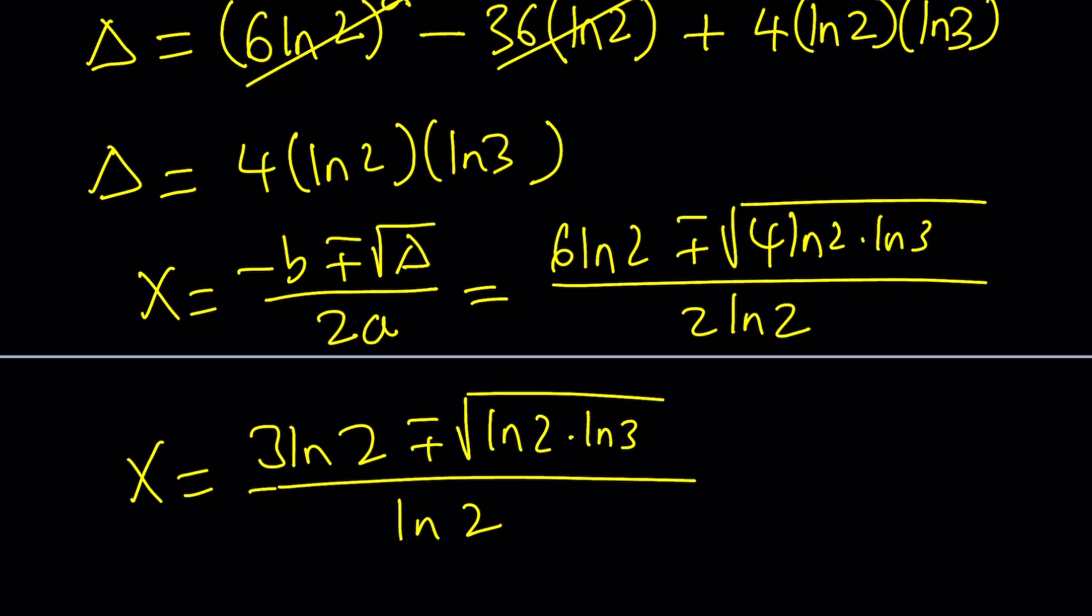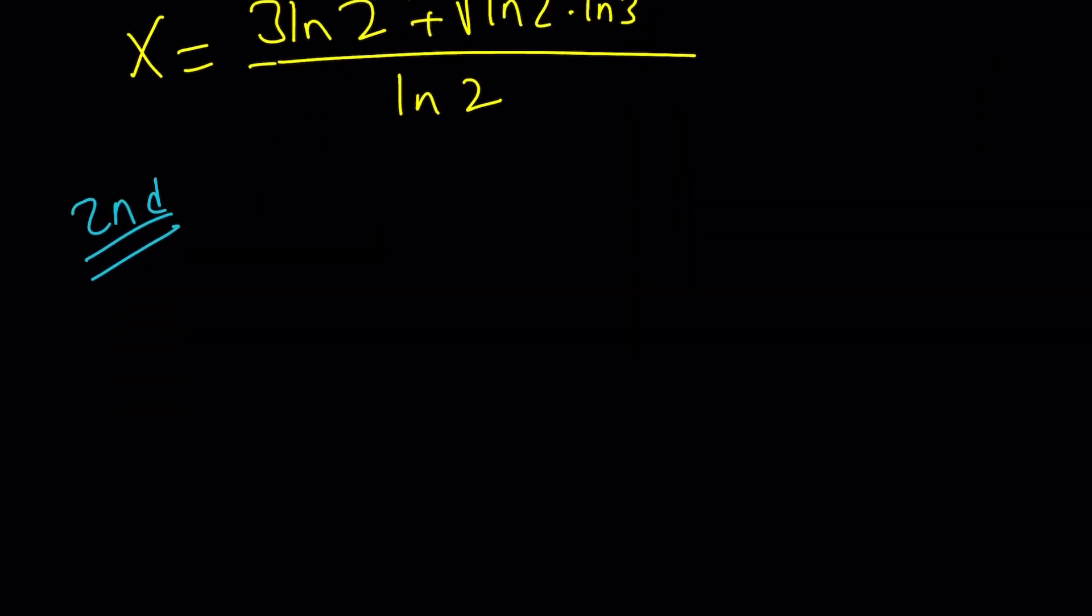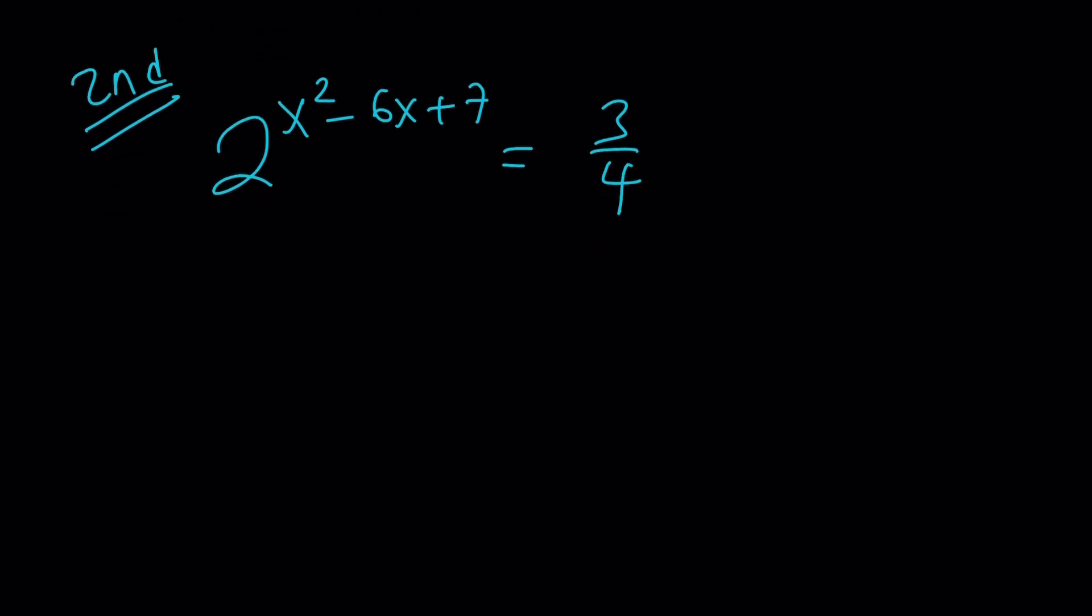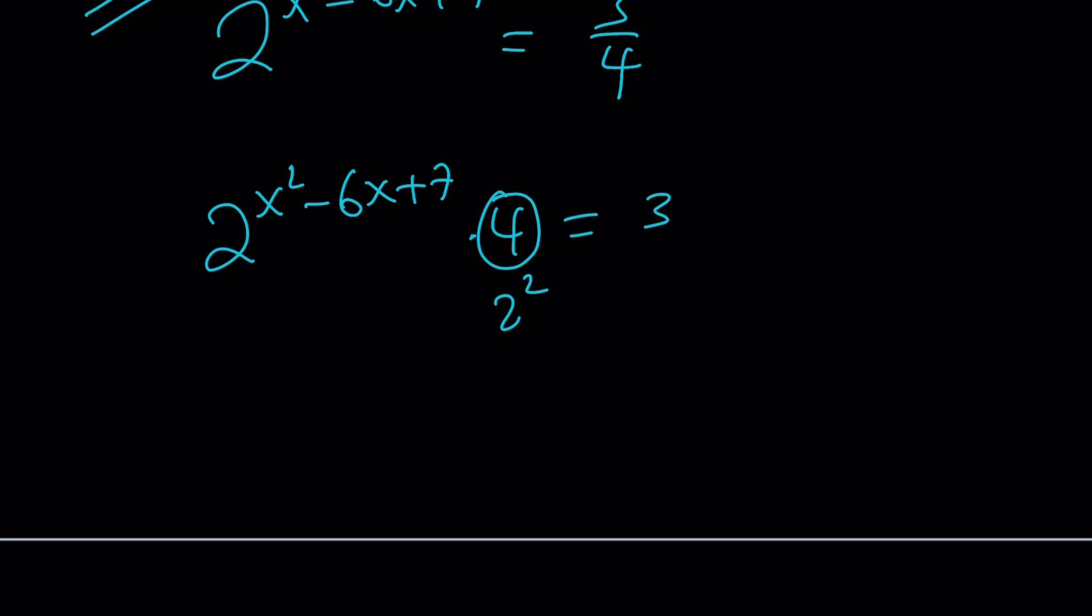Now let's take a look at the second method. The second method actually kind of combines these things beforehand so we can arrive at the solution a little faster. So here's what we're going to do. First of all we're going to cross multiply because 4 is a power of 2. Let's multiply both sides by 4 and now this can be written as 2 squared and then we can add the exponents and that will give us 2 to the power x squared minus 6x plus 9 equals 3.